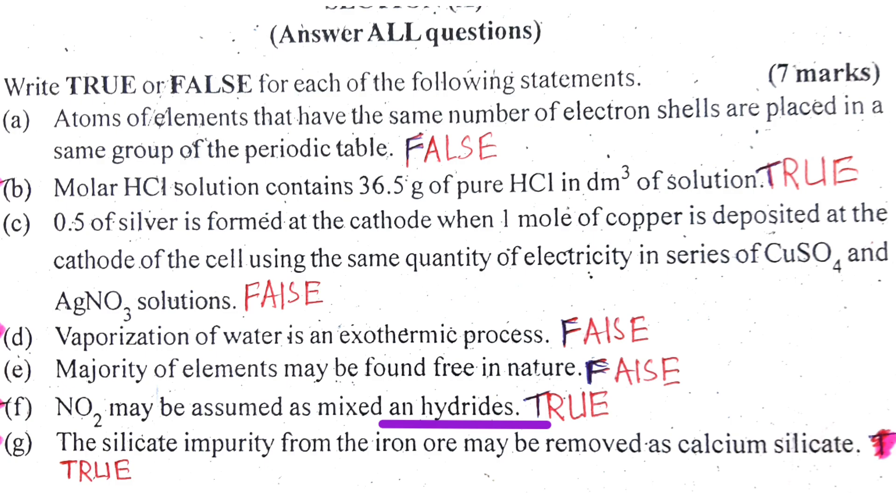Number D: The silicate impurity from the iron ore may be removed as calcium silicate. True.